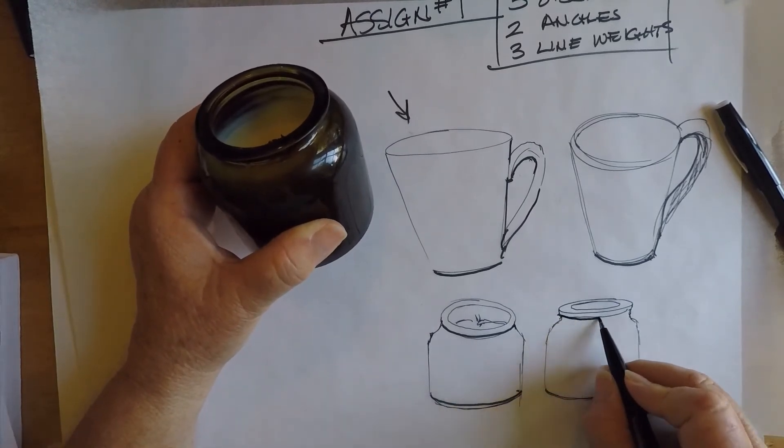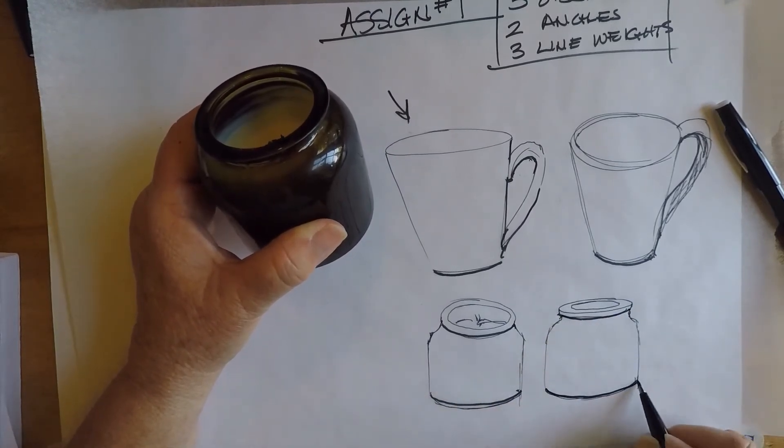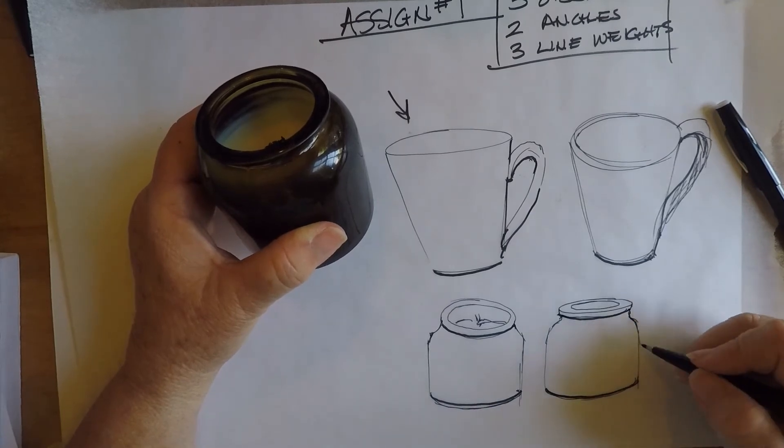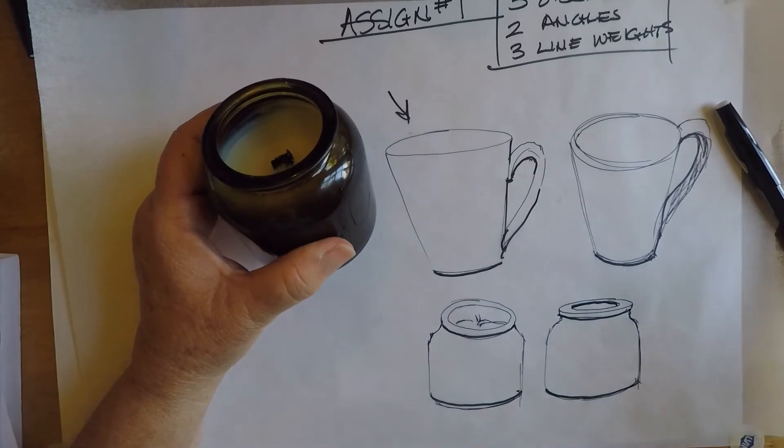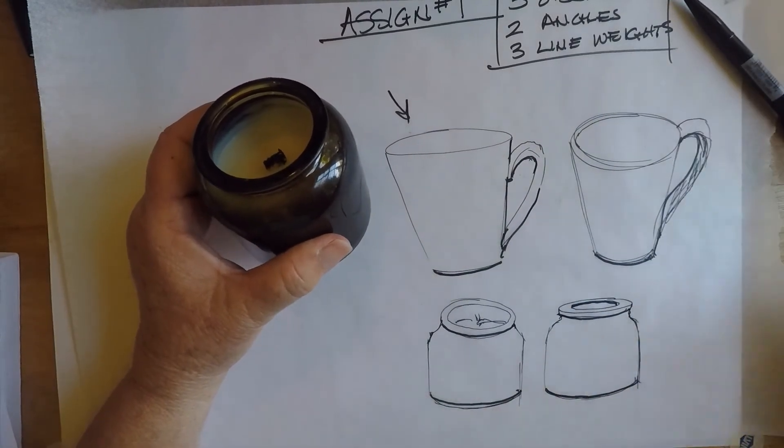So now I'm going to reinforce the underside of the curve here and here, and just maybe this inside as well. So again, we're trying to get a three-dimensional look just with line weight.